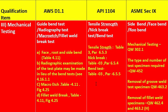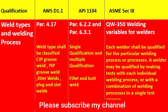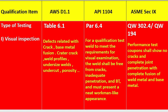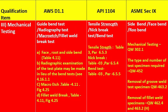In ASME Section 9, mechanical testing includes side bend, face bend, and root bend tests per QW-302.1. The type and number of test specimens are listed in QW-452. Removal of groove weld test specimens is in QW-463.2, and removal of fillet weld specimens in QW-462.4 and QW-463.2(h). This covers weld types and welding processes, position, thickness range, diameter range, and all testing types — visual, NDE, and mechanical.